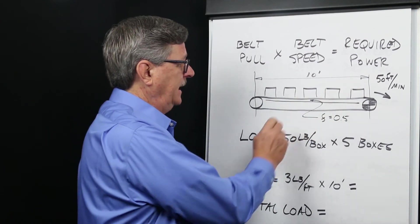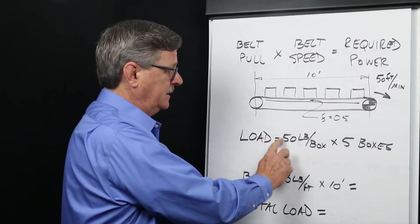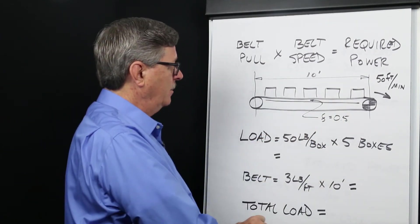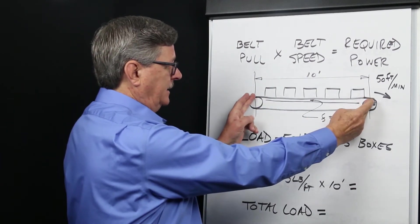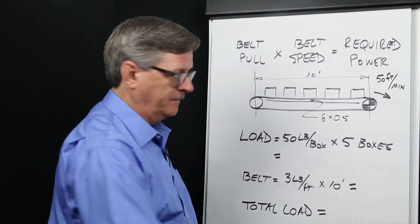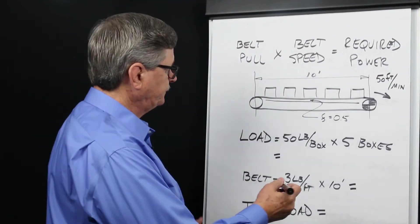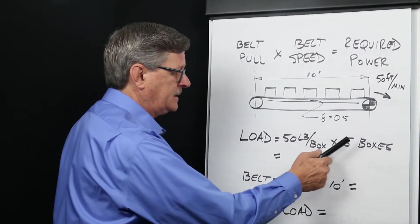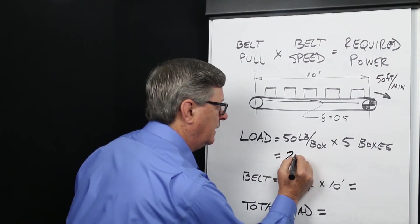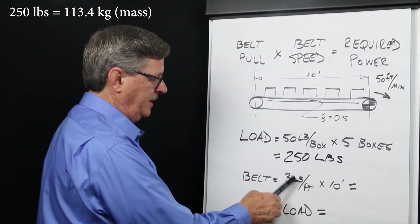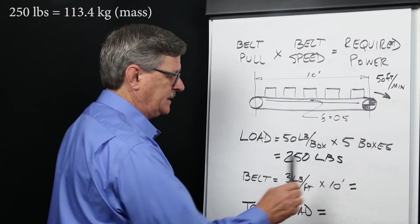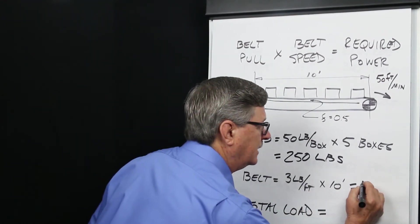5 packages at 50 pounds per package plus the weight of the belt, which is 10 feet on the slider bed, times 3 pounds per foot. 50 pounds per box times 5 boxes is 250 pounds. 3 pounds per foot of belt times 10 feet of belt equals 30 pounds.